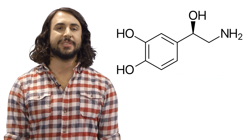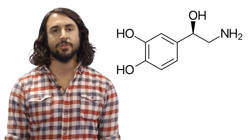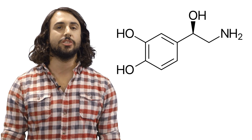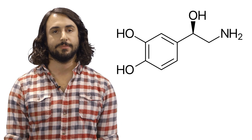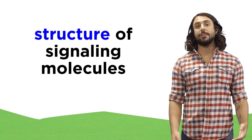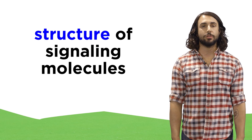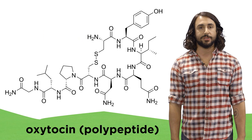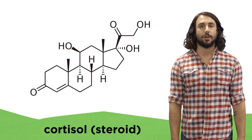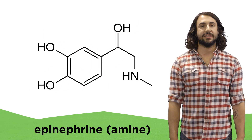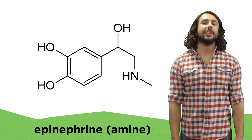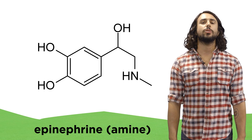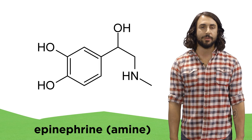So what are the names of some of these hormones and neurotransmitters, and what exactly are the messages they carry? Many of the signaling molecules fall into three structural categories: polypeptides like oxytocin, steroids like cortisol, and amines like epinephrine. We've already learned about the properties of these types of molecules, so let's talk about how they interact with the body.